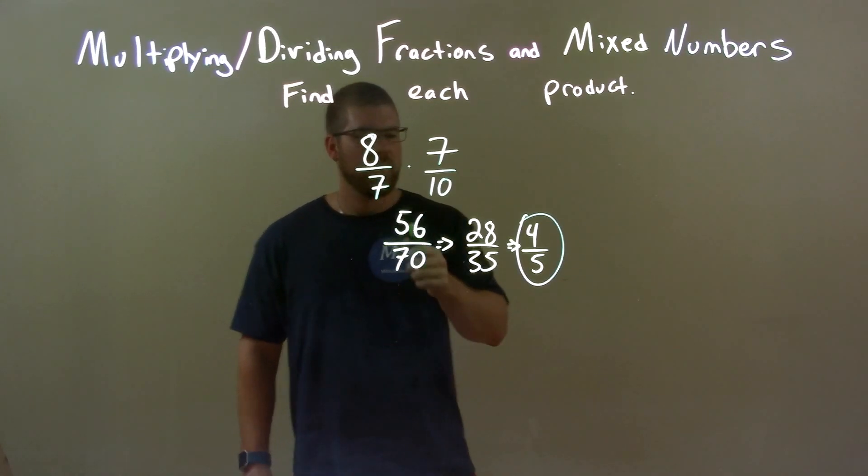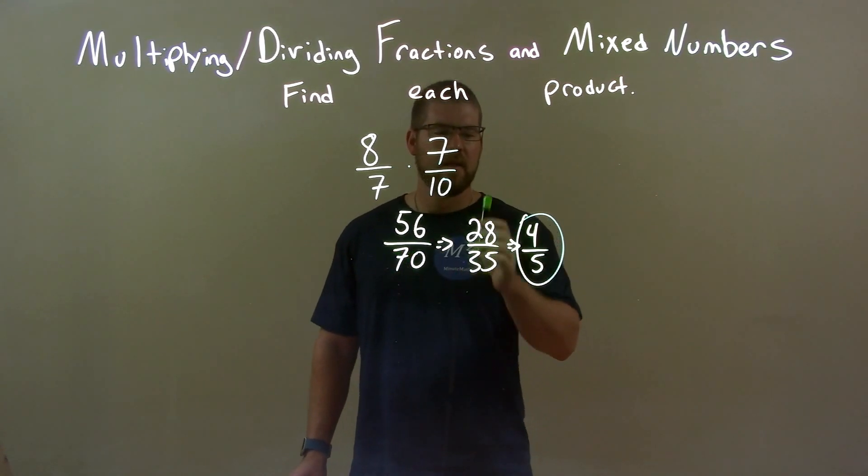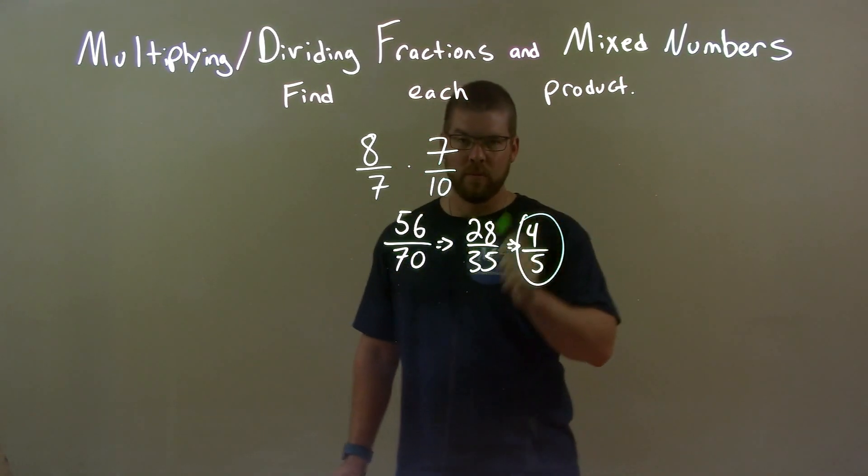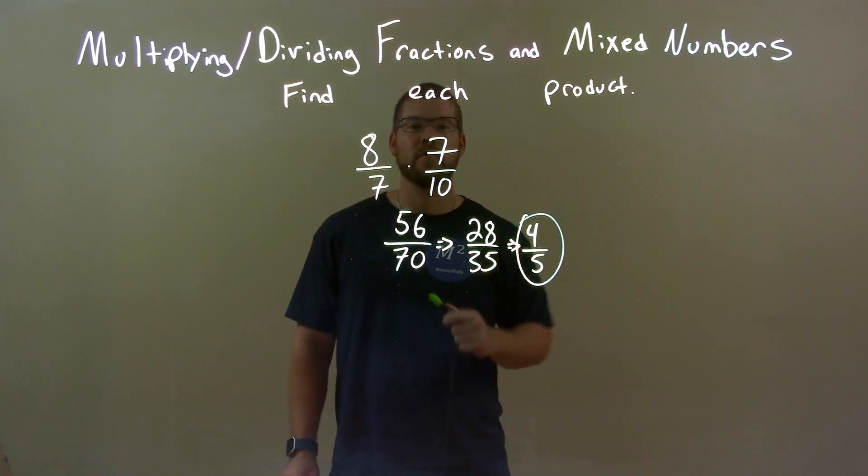Then we simplified that fraction. 56 and 70 were both divisible by 2, and then 28 over 35 were both divisible by 7. So our final answer is just 4 over 5.